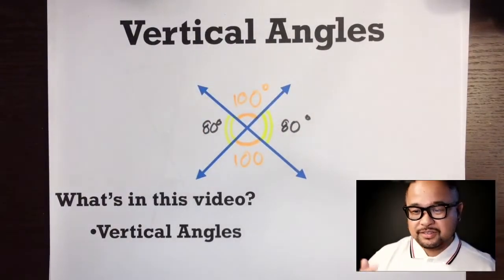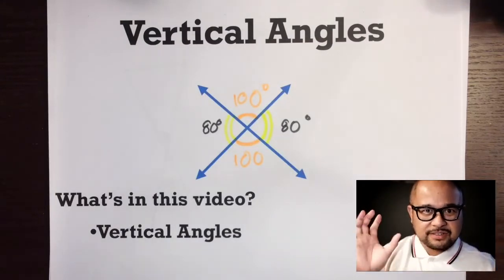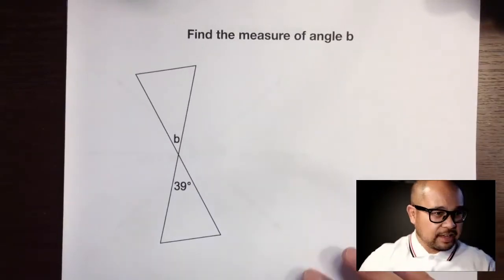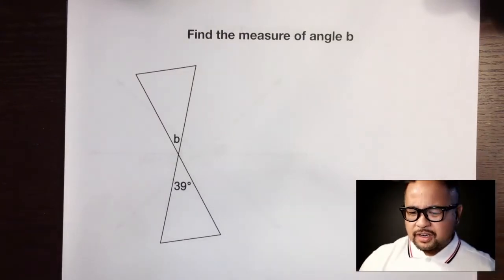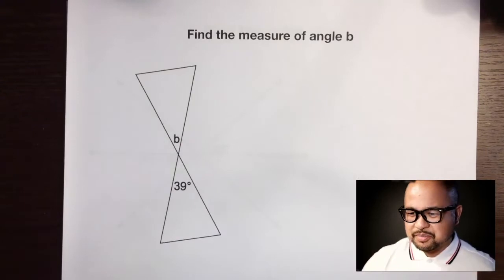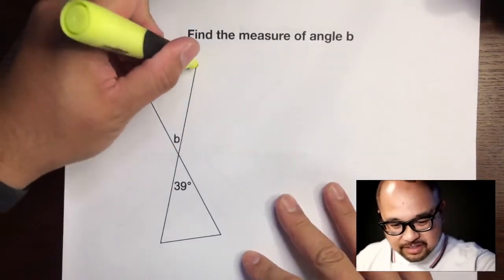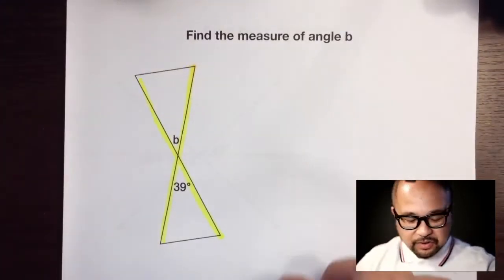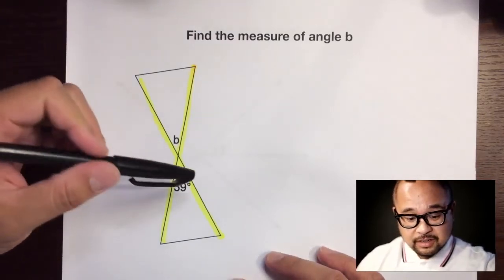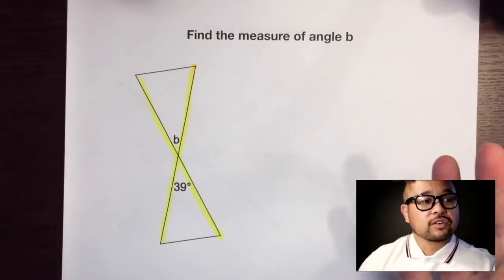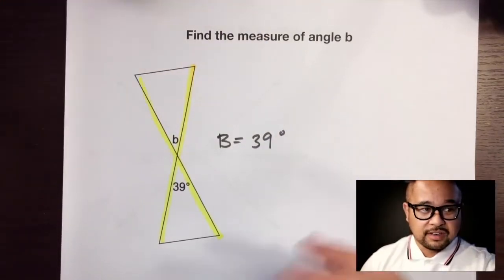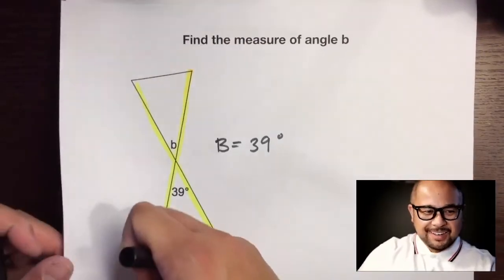Vertical angles are congruent: if one angle has a certain measure, its vertical angle has the exact same measure. Let's do an example: find the measure of angle B. In geometry, make sure you filter out what you don't need and focus on what you do need. Highlight the two lines — that's an X — and this angle is on the opposite end of the given angle, so they're vertical angles. Vertical angles are congruent, so B is 39 degrees.